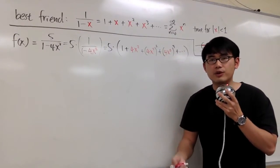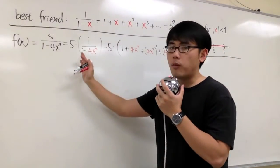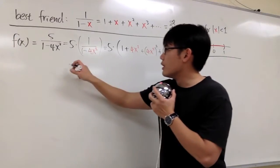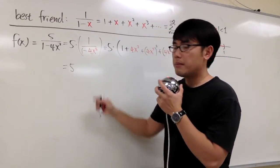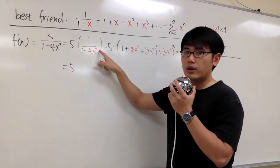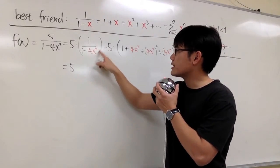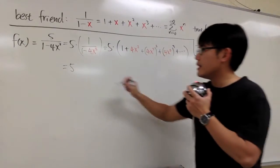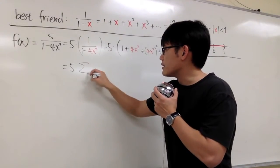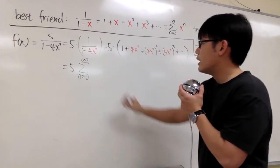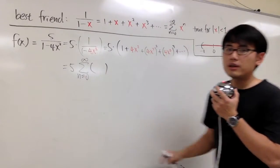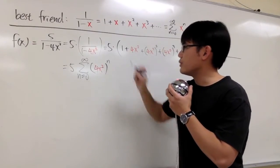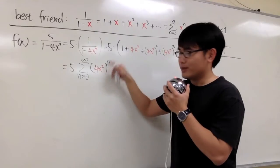We can work with the sigma notation for a more compact form. We have 5 in the front, then 1 over 1 minus 4x squared — plugging 4x squared into x in the sigma notation form. That gives us the sigma from n equals 0 to infinity of (4x²)^n, raised to the nth power.